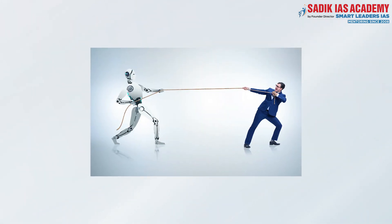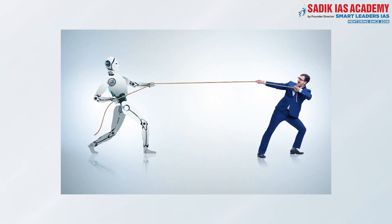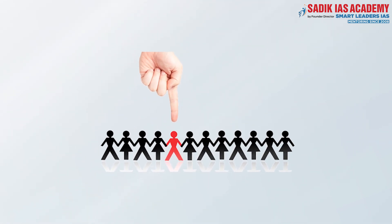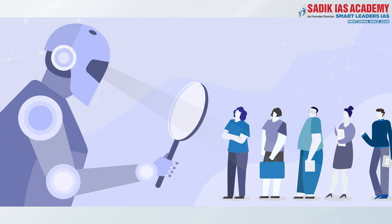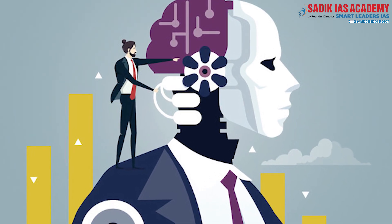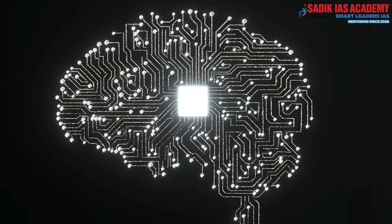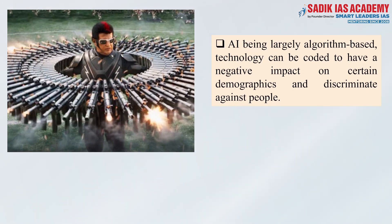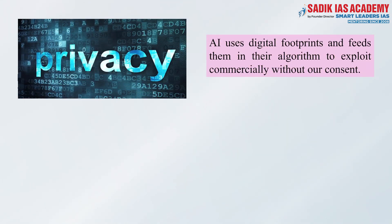On the other hand, humans may lose their creative power because machines do it better. Sometimes human beings are biased against many things like religion, gender, etc. This bias may unconsciously also enter into artificial intelligence systems developed by human beings due to flawed data. Artificial intelligence, being largely algorithm-based, can be coded to have a negative impact on certain demographics and discriminate against people. Artificial intelligence also presents serious data privacy concerns — the algorithm's quest for data would lead to harvesting of our digital footprints, which might be sold without our knowledge or informed consent.